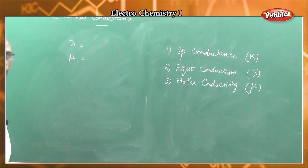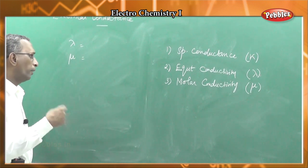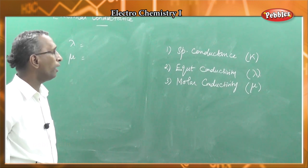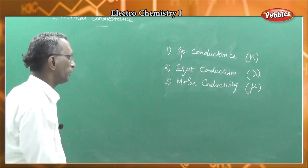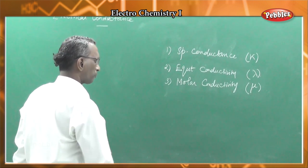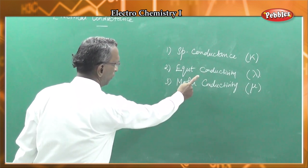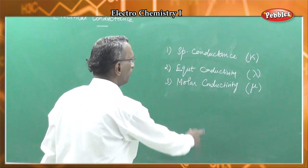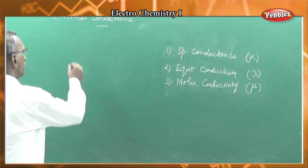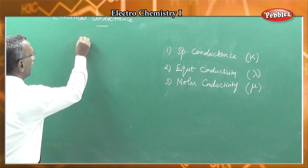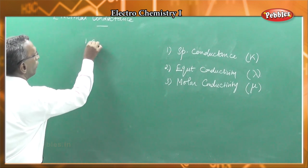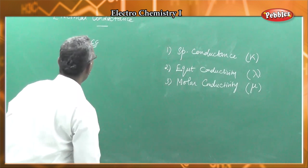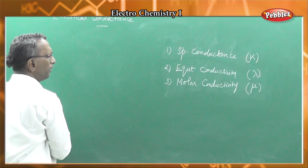Now, what is meant by equivalent conductivity and molar conductivity? First let us recall the formulas, and then we will do the definitions. Specific conductance or conductivity is denoted by kappa. Equivalent conductance or equivalent conductivity is denoted by lambda. Molar conductivity is denoted by mu.